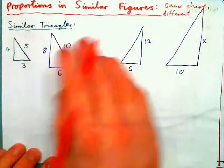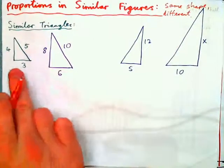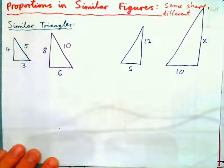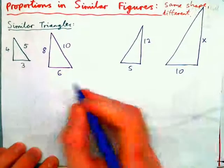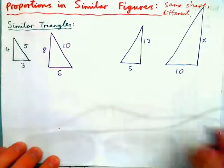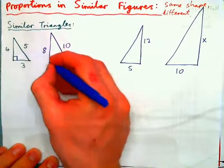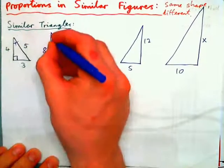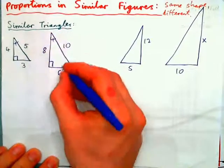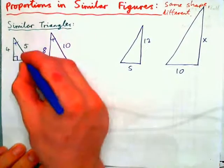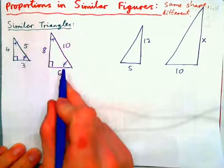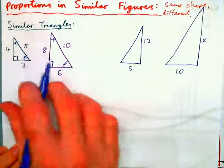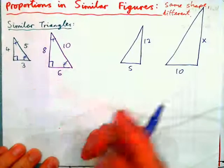For example, these are two similar triangles — the green one and the purple one. You'll notice they're both right angles. This angle should be the same as this angle, so they have all the same angles, and that means they're exactly the same shape.